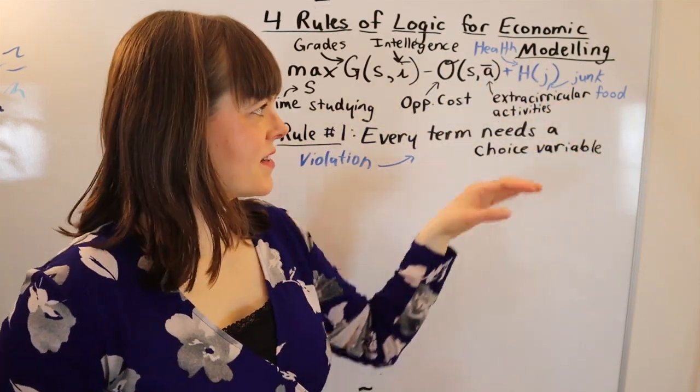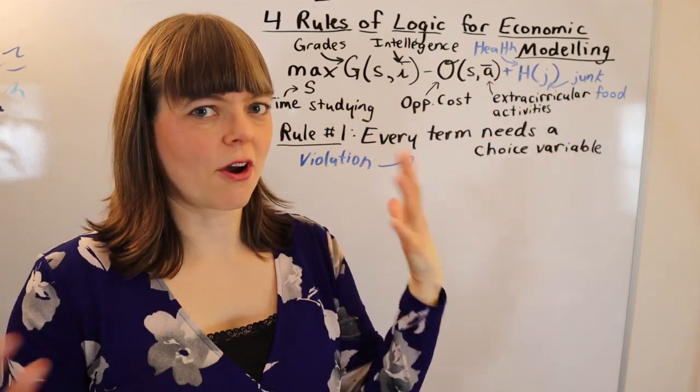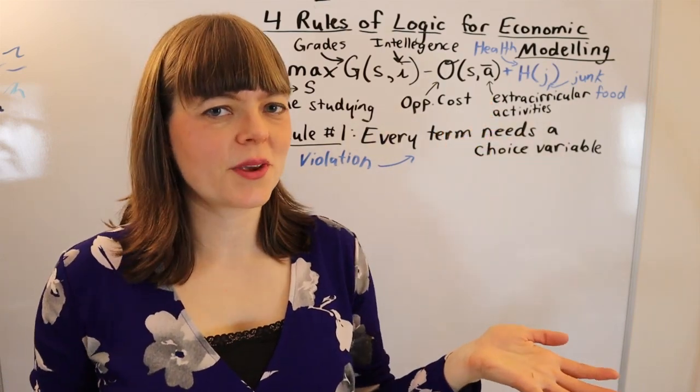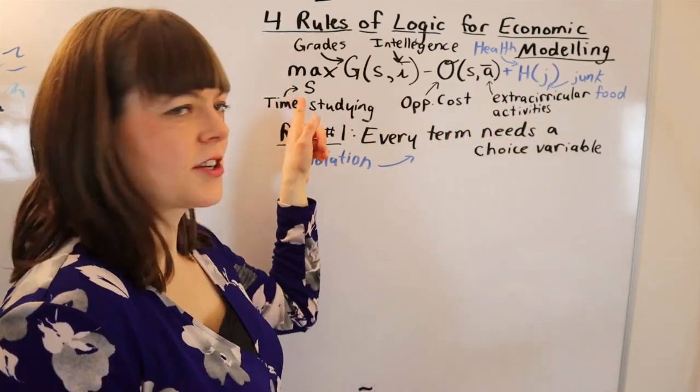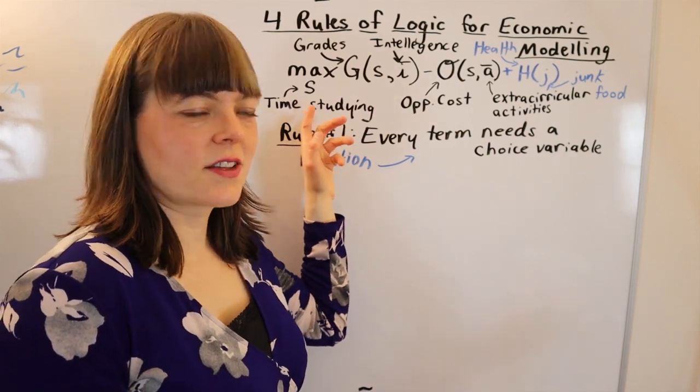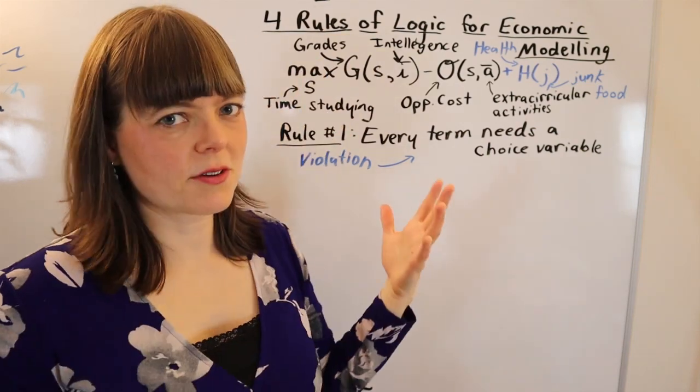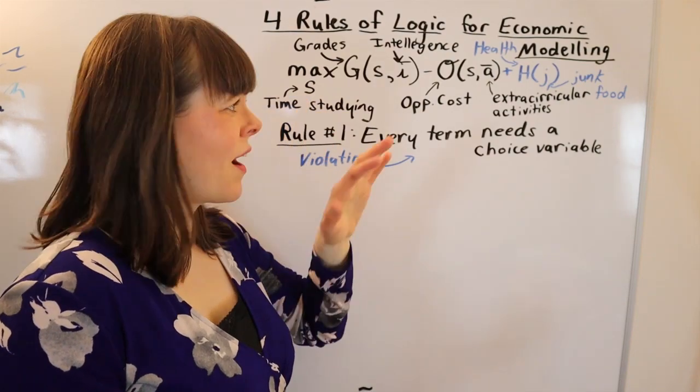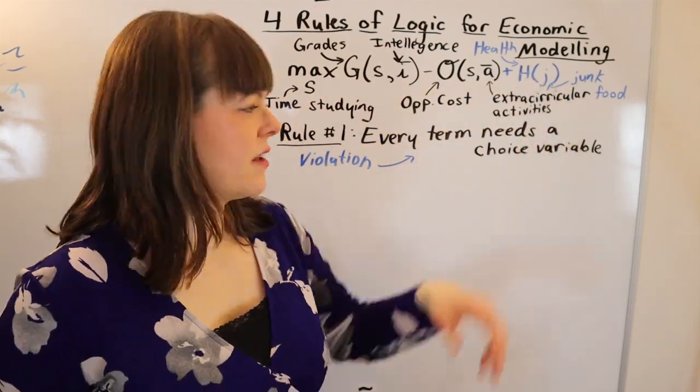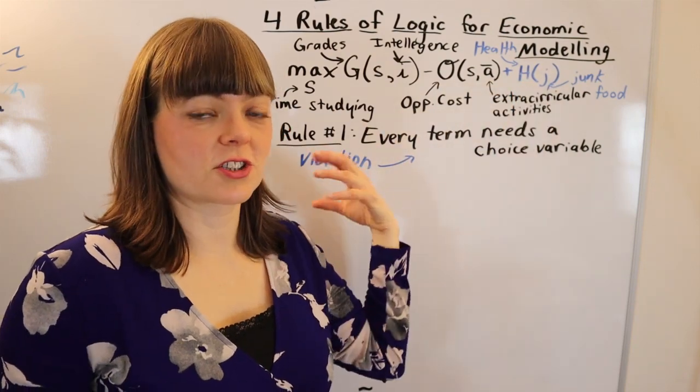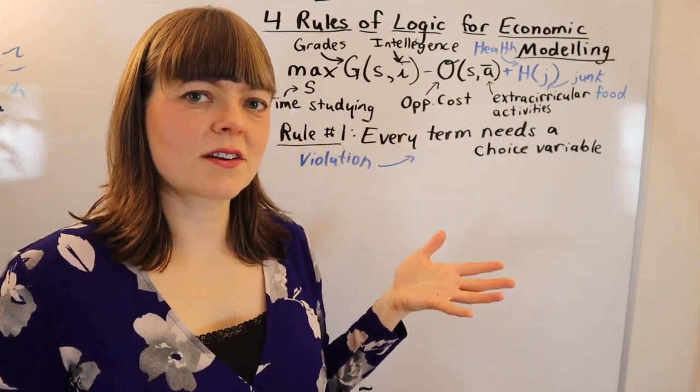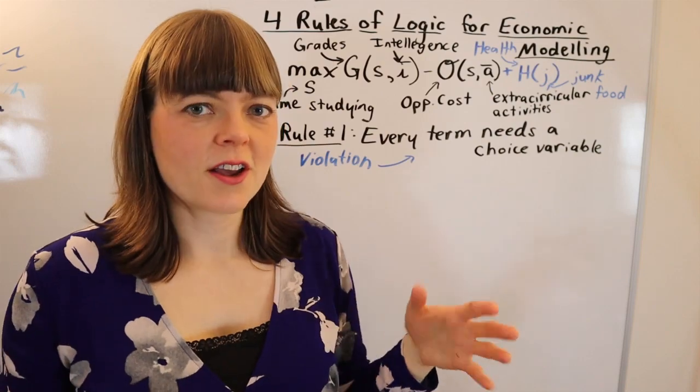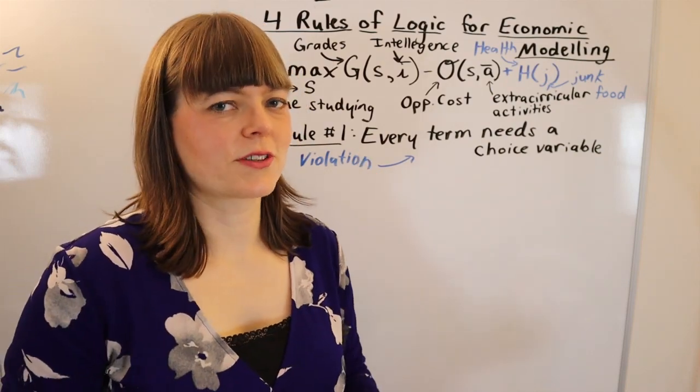I've added a term to this model which is health as a function of how much junk food you eat. It's not that this term is wrong—health is a function of how much junk food you eat—it just has nothing to do with time spent studying. When we solve this model and do comparative statics, the optimal choice of time spent studying will not have anything to do with this term. So make sure every term has a choice variable.